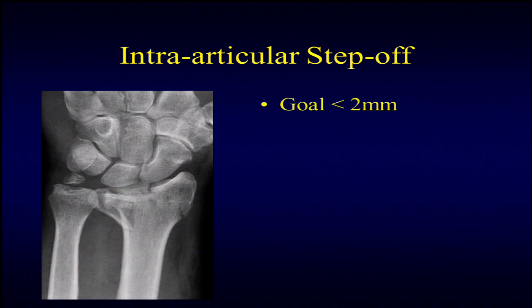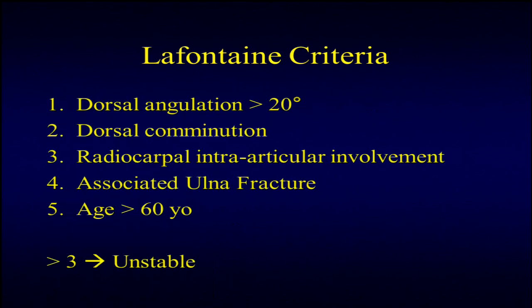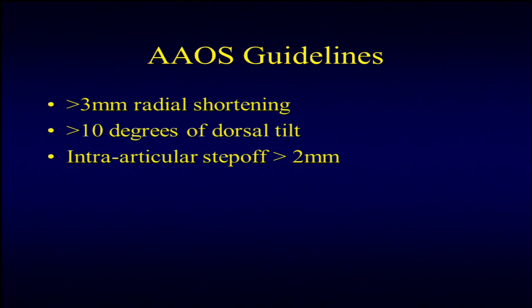Patients will also have some loss of pronation and supination. For intra-articular step-off, our goal is less than 2 millimeters. The classic article by Jesse Jupiter demonstrated that greater than 2 millimeters led to roughly 91% of degenerative joint disease at about 7-year follow-up—though having that degeneration doesn't necessarily mean they'll be symptomatic. Some use the LaFontaine criteria: having more than 3 factors including more than 20 degrees dorsal angulation or an associated ulnar fracture pushes you towards operative treatment. The AAOS guidelines recommend surgery for greater than 3 millimeters of shortening, greater than 10 degrees of dorsal tilt, or an intra-articular step-off of more than 2 millimeters.